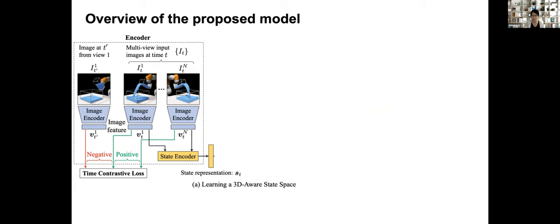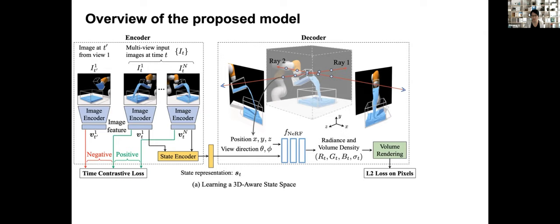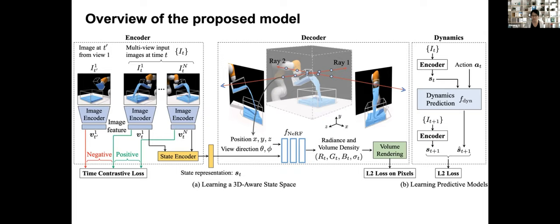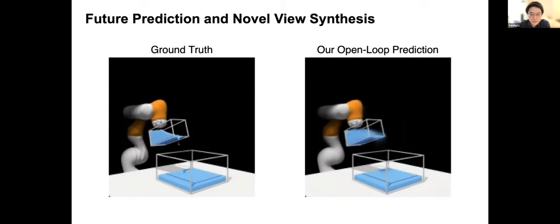Here is the overview of the proposed method. Our model consists of three parts. In the left part, there is an encoder that maps the visual observations into a latent scene representation. In the middle part, we modify the NERF model to render the visual observation conditioned on the scene representation and the query viewpoint. In the right part, there is a dynamic model that predicts the evolution of the latent representation conditioned on the input action. Next, Yunzhu will show more results.